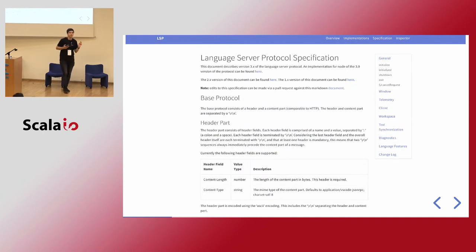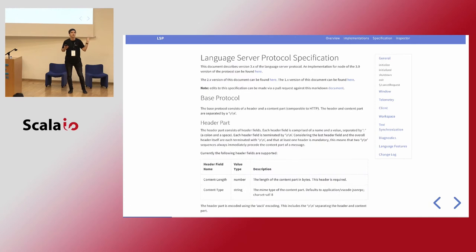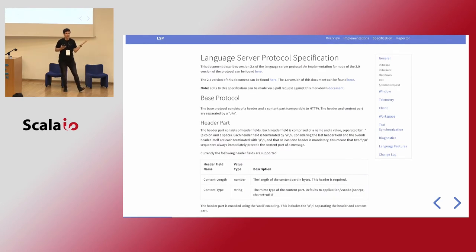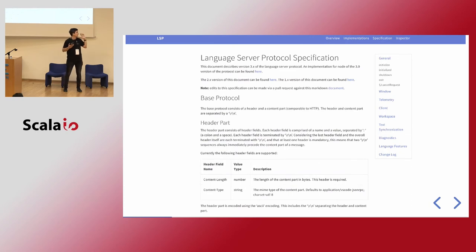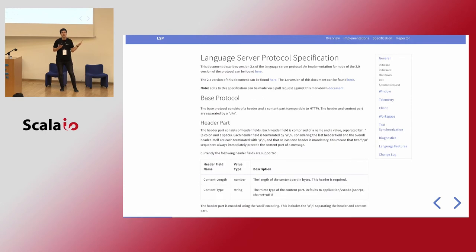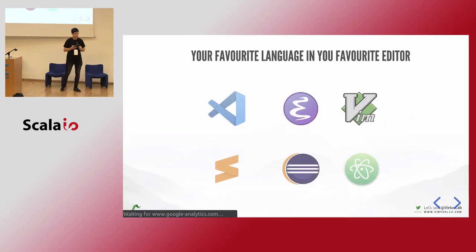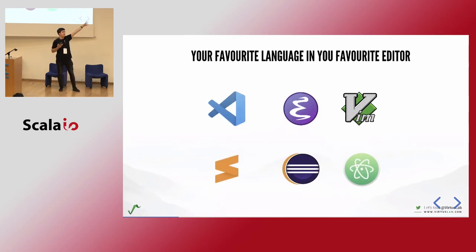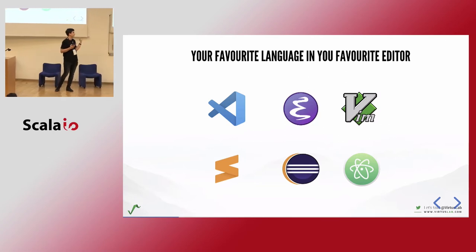We do this via LSP — the Language Server Protocol. It's a protocol that enables any editor client to connect to any backend server that explains the language to the client using JSON RPC. JSONs are sent to the server to ask for features and sent back with resulting information the IDE can use to display, for example, completions or rename. This is all done by Microsoft, it's open source on GitHub, has a specification and a nice website. Metals is the LSP server for Scala.